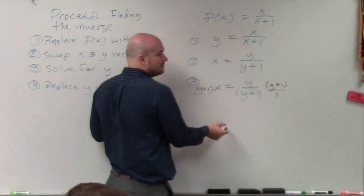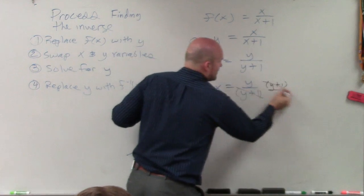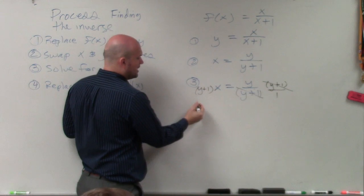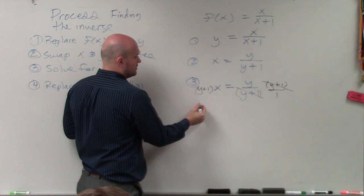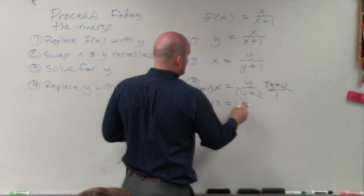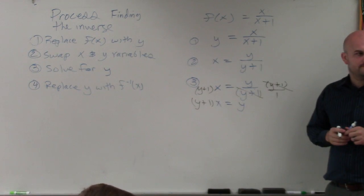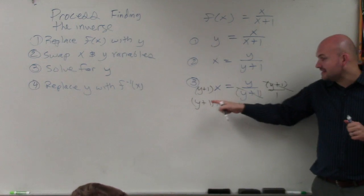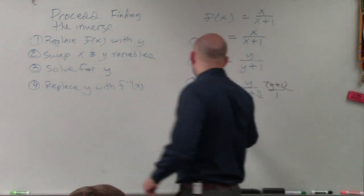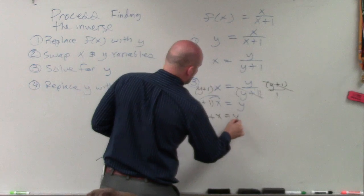Any time you multiply a fraction with the same term in the numerator and denominator, that divides to 1. So now I'm left with y plus 1 times x equals y. Now I still need to solve for y, and I have a y on both sides. But the best thing to do is apply the distributive property. So now I have yx plus x equals y.